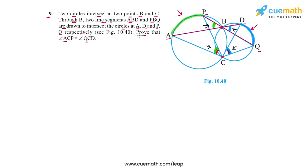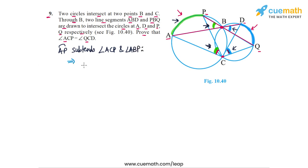Let's write out this proof. Arc AP — this arc highlighted — subtends two angles at the circumference: angle ACP and angle ABP. Since both are angles at the circumference subtended by the same arc AP, this means angle ACP must be equal to angle ABP.